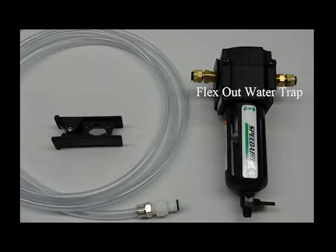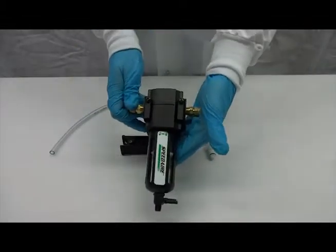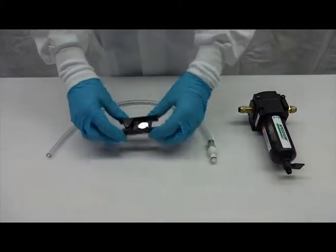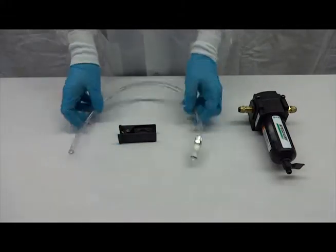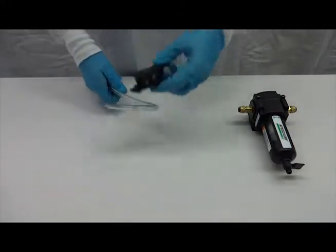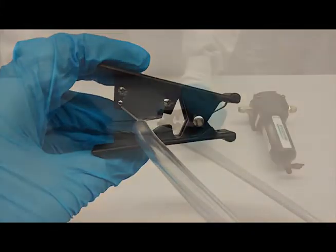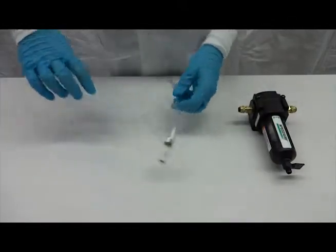The flex out water trap has three 1/8 inch brass fittings connected. To connect the flex out water trap in line with your flex out tubing, cut the length of the flex out tubing between your base plate and flex link controller as near as possible to the base plate, remaining outside of the incubator so that the water will be trapped away from the flex link.